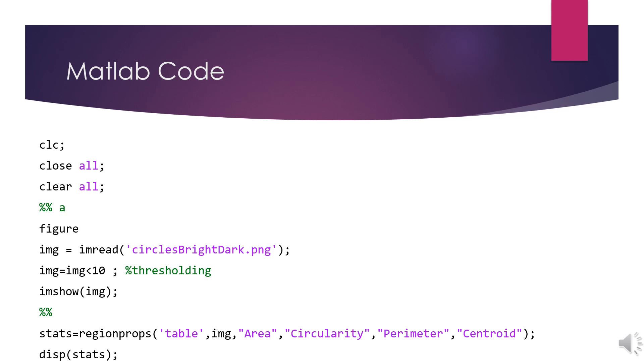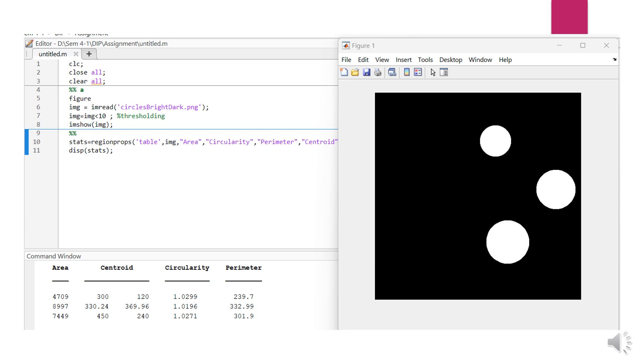Here image is given as input to the function. After running the program we can see the three circular regions in the input image. In the command window we can see the properties of three regions such as area, circularity, perimeter and centroid are calculated.